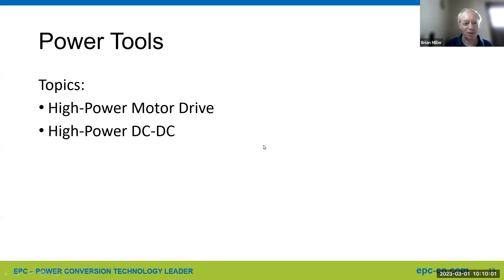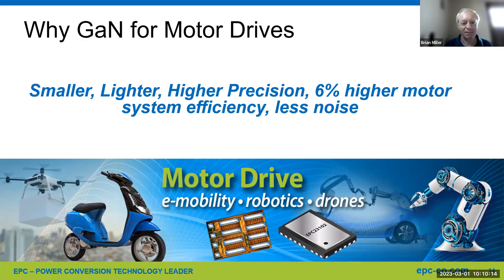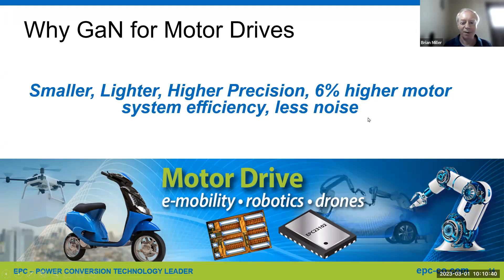Another example is power tools. Compared to vacuums, power tools would have more power, and the DC-DC would have more power also. For motor drives: smaller, lighter, higher precision, 6% higher motor system efficiency — we'll get into details on that later — and less noise. When you see less noise, that includes not just electrical noise but also audible noise. You can have less audible noise, and there's a nice video on the EPC website showing how to reduce audible noise using EPC GAN FETs.